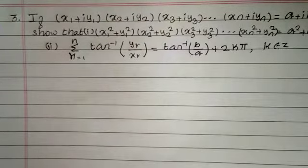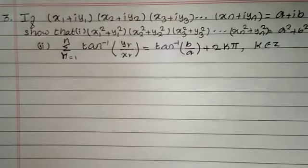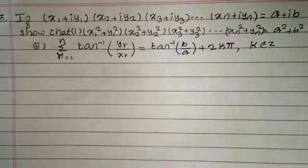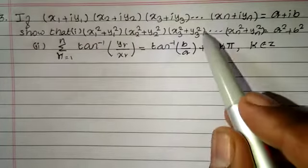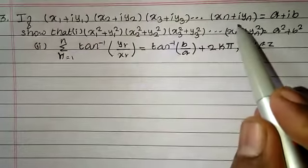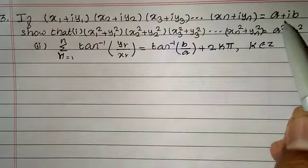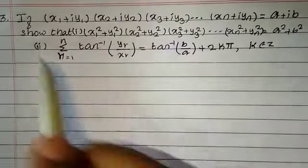Exercise 2.7, third sum. If x1 plus iy1, x2 plus iy2 into x3 plus iy3, and so on, xn plus iyn equals a plus ib,